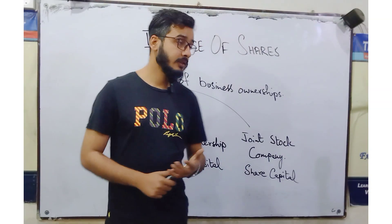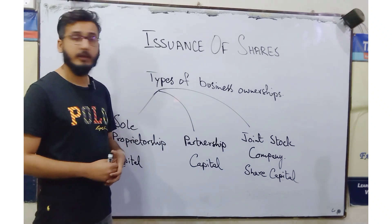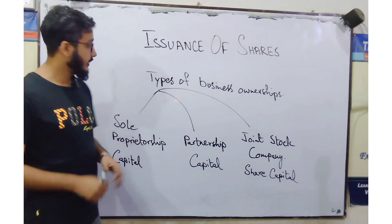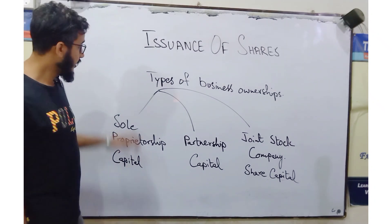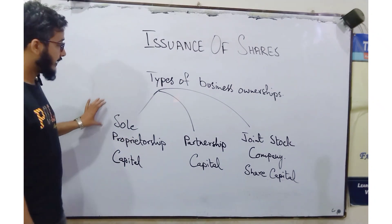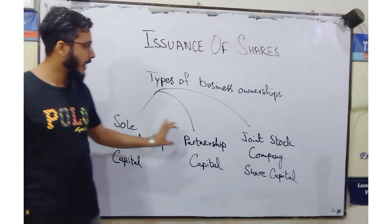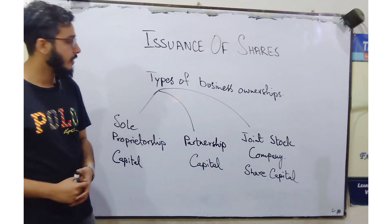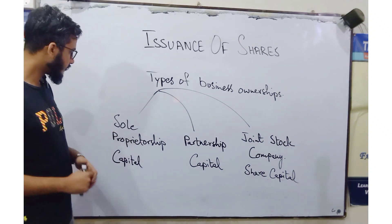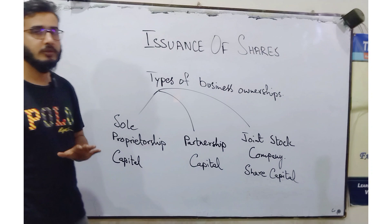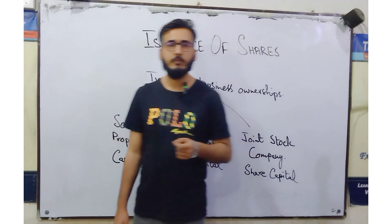Before we go into the entries, first we have to know about the theory regarding shares. We all know that there are three types of business ownerships: number one is sole proprietor, the other one is partnership, and the third one is joint stock company. For now, we just want to discuss about the capitals which are involved in different businesses.